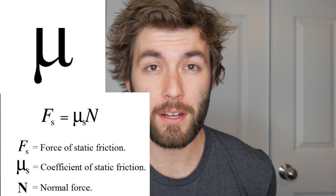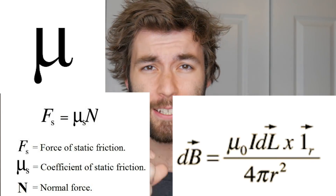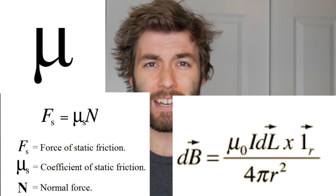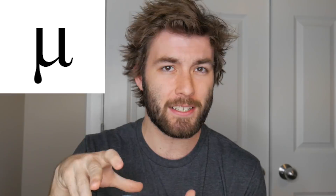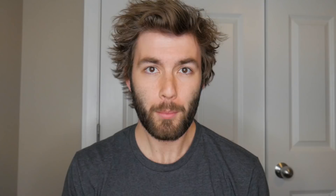Lowercase mu can be two things: it's either going to be some coefficient of friction or the permeability of free space, which relates magnetic flux and the concentration of field lines. Lowercase nu is sometimes used as a substitution for f when talking about the frequency of a wave.